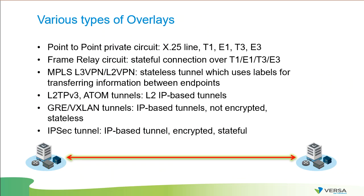Let's talk about various types of overlays. On this slide you can see the most popular overlay types used through the history of WAN networks. Nowadays, the most used overlays are MPLS Layer 3 VPN — a stateless connection provided using MPLS underlay networks. The second most popular overlay type is IPsec, GRE, and VXLAN tunnels — IP-based tunnels that can run not only through the MPLS network but also through regular internet connections. They all have different pros and cons: IPsec tunnels are always encrypted and stateful, while GRE and VXLAN are in most cases stateless, as are MPLS connections.